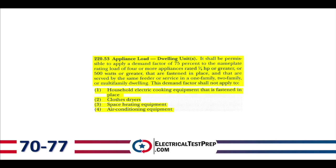Section 220.53, Appliance Loads for Dwelling Units: it shall be permissible to apply a demand factor of 75% to the nameplate rating of four or more appliances rated ¼ horsepower or greater, or 500 watts or greater, fastened in place on the same feeder in a one-family, two-family, or multifamily dwelling. This demand factor does not apply to household electric cooking equipment (Table 220.55), clothes dryers (220.54), space heating equipment (100%), or air conditioning equipment (100%).